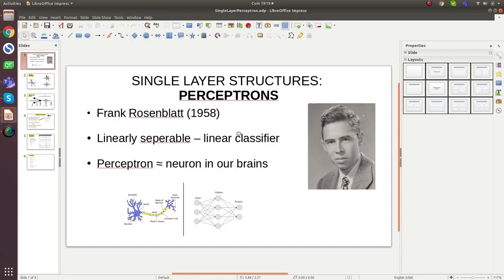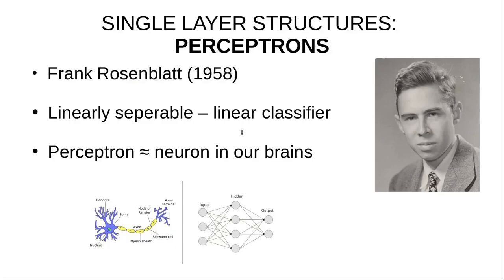Hi everyone, welcome back. In this video series I want to talk about neural networks. Neural networks are the fundamental of artificial intelligence and machine learning. We will start from the neural networks part, which is the starting point of many AI and machine learning topics. In computer vision and many other areas, we are widely using AI and machine learning and many libraries and tools — but fundamentally we don't really know what they are in reality.